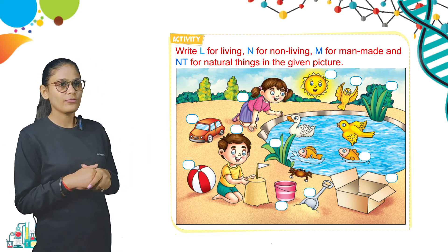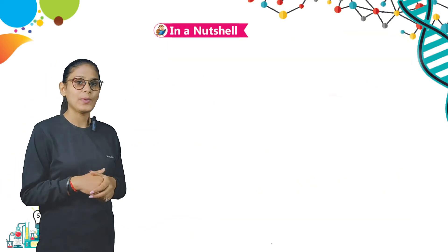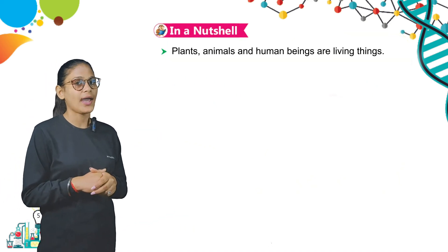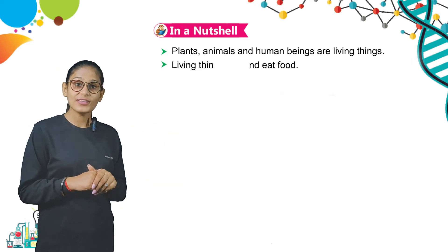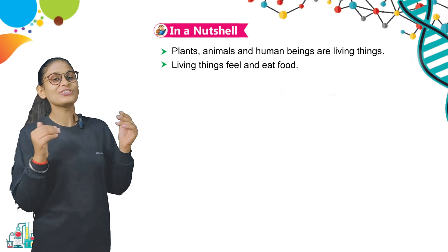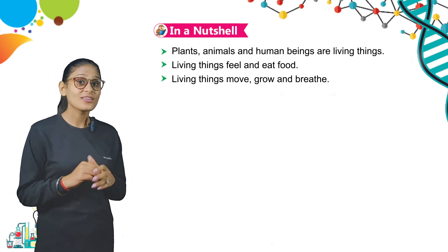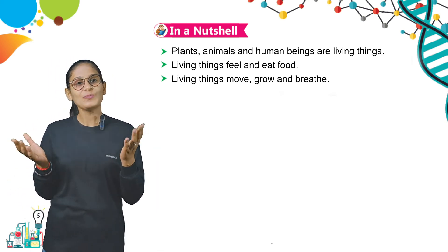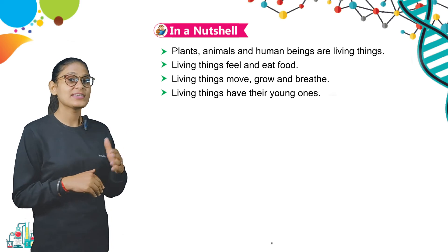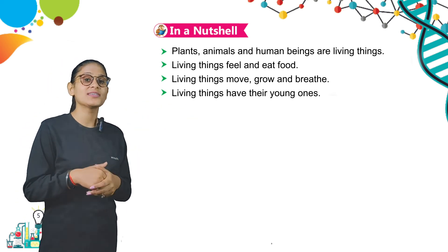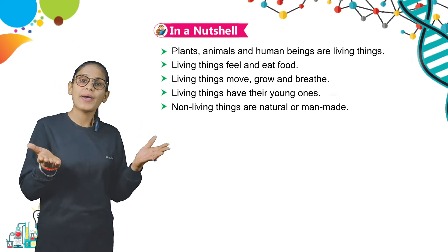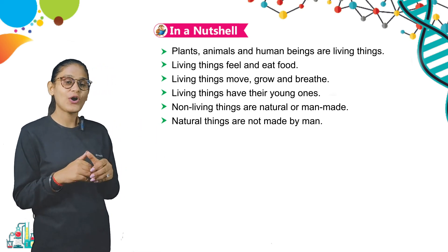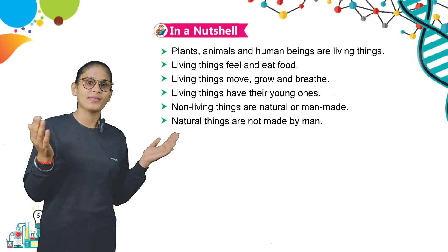Now let's wrap up what we have studied in this chapter. In a nutshell: plants, animals, and human beings are living things. Living things feel and eat food. Living things move, grow, and breathe. Living things have their young ones. Non-living things are natural or man-made. Natural things are not made by man.